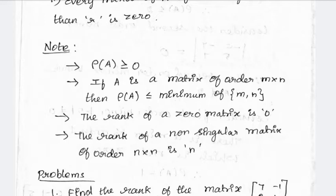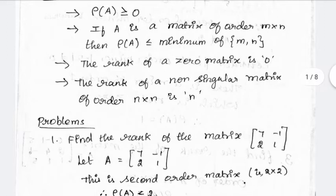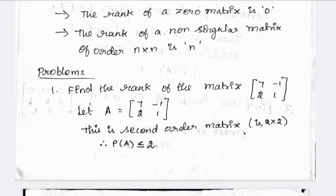Rank of A is less than or equal to minimum of m and n, which here equals 2. Rank of a non-singular matrix of order n×n is n. Non-singular means determinant is not equal to 0. In this example, this non-singular matrix of order 2×2 has rank 2.